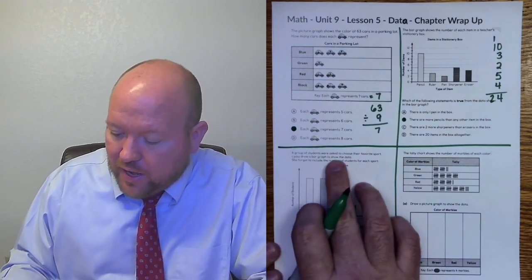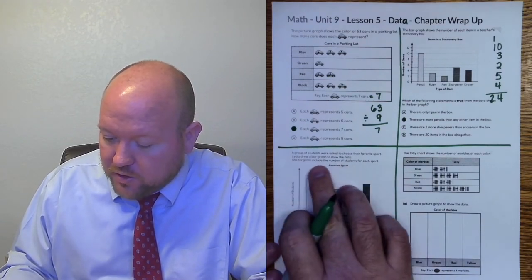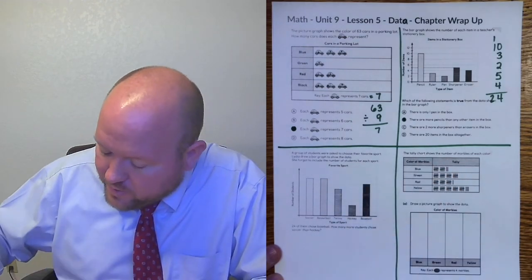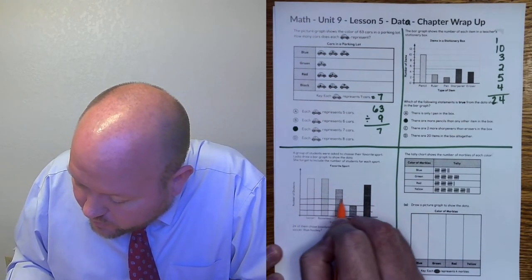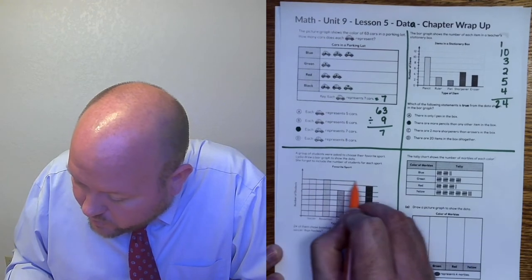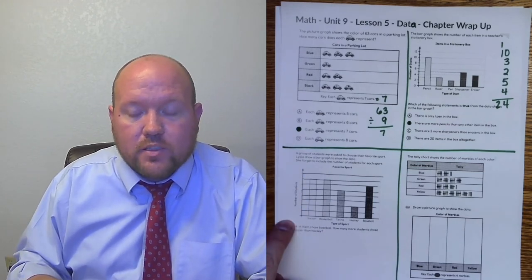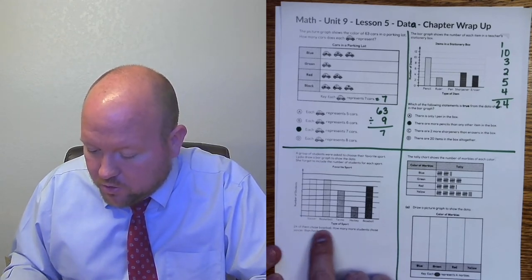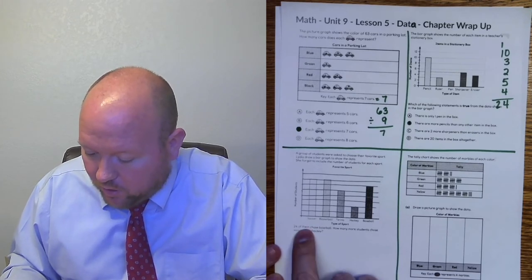Let's look at the next one. A group of students were asked to choose their favorite sport. Lydia drew a bar graph to show the data. She forgot to include the number of students for each sport. So here, it's kind of difficult to see, but there's these lines here going across just like this. So she forgot to put how much each of these were worth on this side. So what we have to figure out is how much it's worth. So there are 24 of them who chose baseball. How many more students chose soccer than hockey?